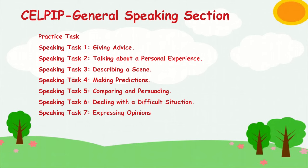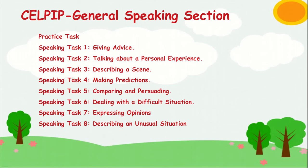Speaking Task 7 is expressing opinions — you will speak out your opinion on a given issue and may be asked some questions which you will answer based on your opinion. Speaking Task 8 is describing an unusual situation — this task will give you a photo of some product, and you will speak to a known person or family member as if you are calling them on the phone, explaining about that product by looking at the picture provided.